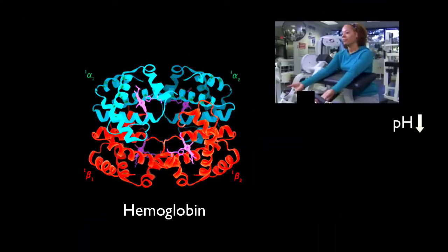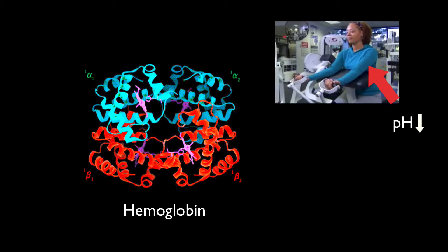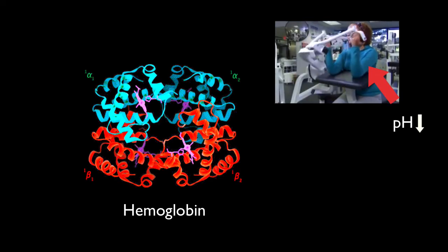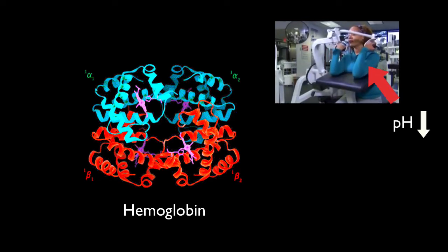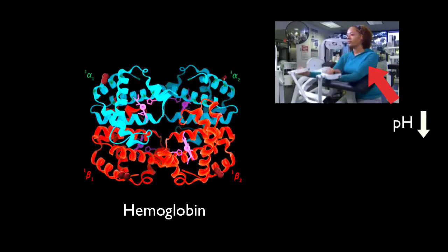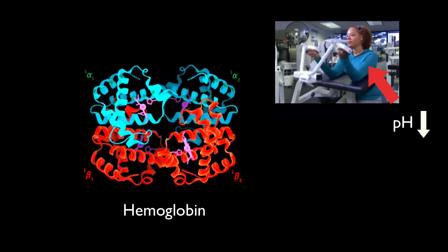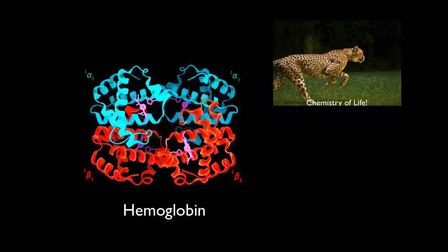So wherever oxygen is needed most also happens to be where the pH is the least. And this is where hemoglobin releases oxygen the best. Right where it's needed. That's the chemistry of life.